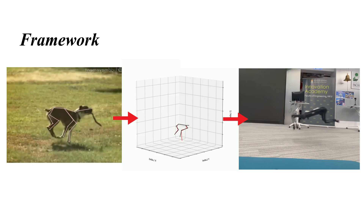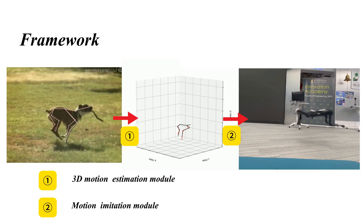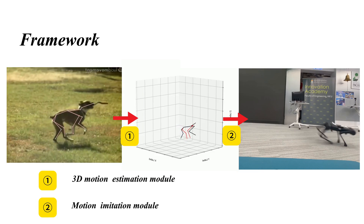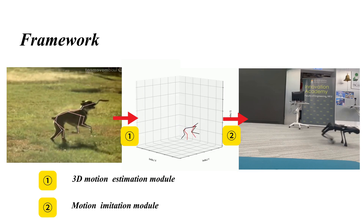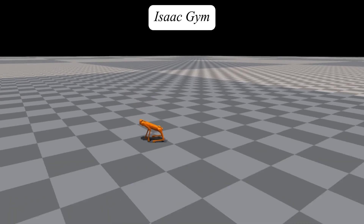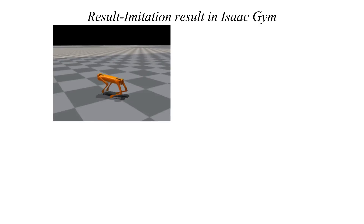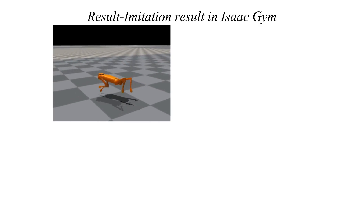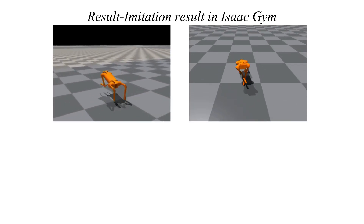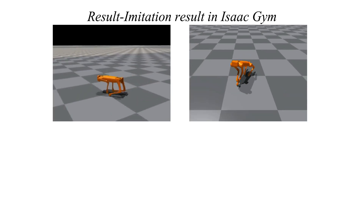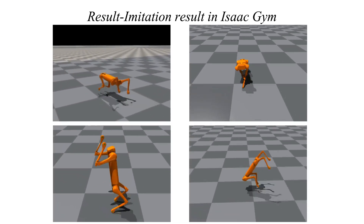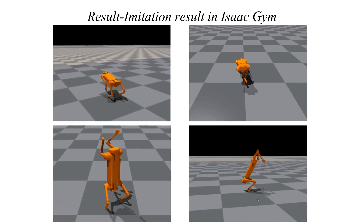In the motion imitation module, we train new and agile locomotion skills based on retargeted motion data and a motion priors-based imitation learning method. The policy is trained in Isaac Gym. The robot Alingo achieves high-speed and explosive actions such as gallop, tripod, rapid, and backflip, demonstrating the framework's effectiveness.